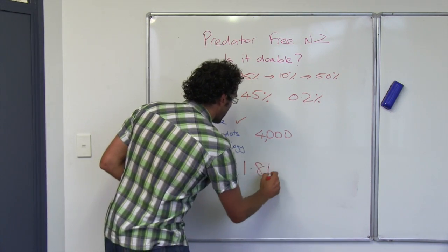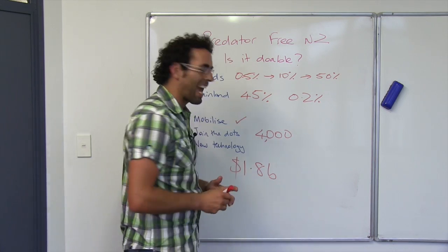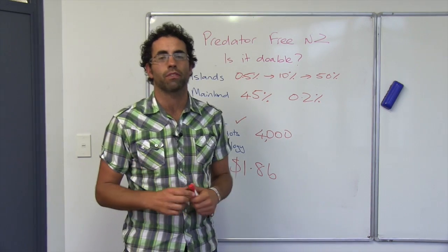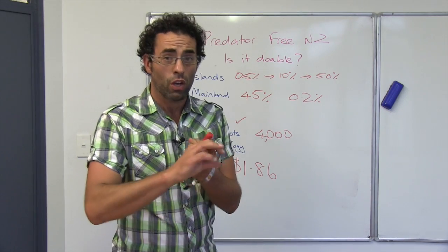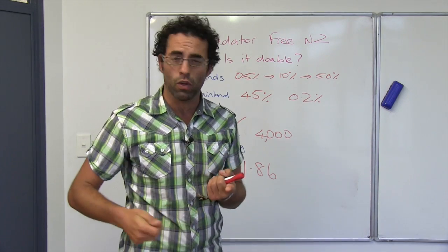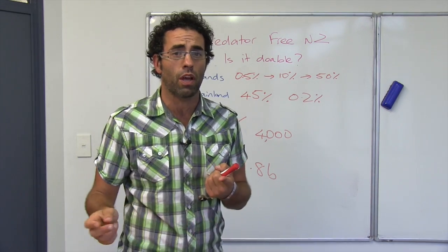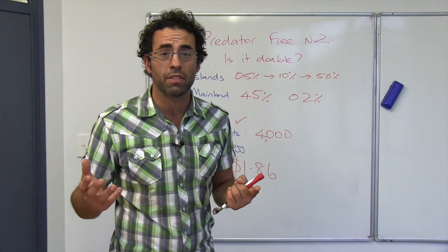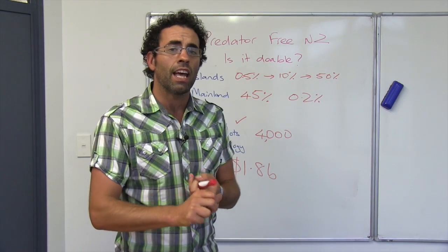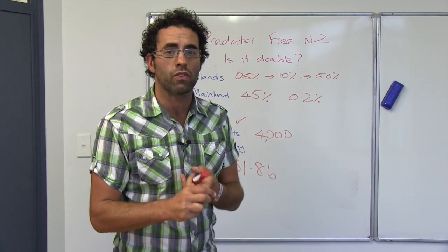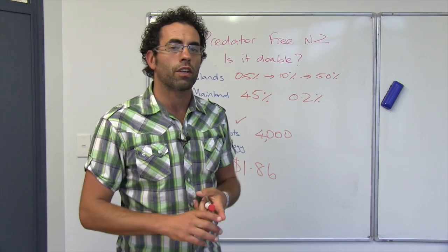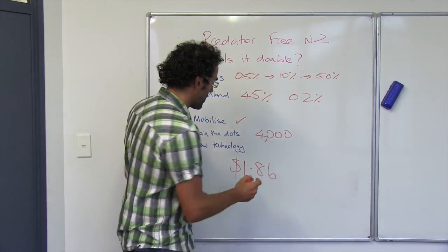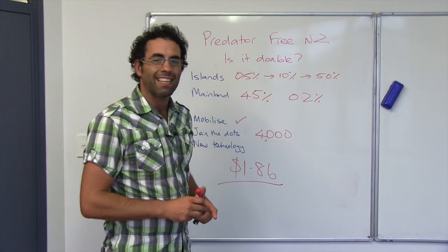We currently spend about $1.8 billion at the moment on the damage that predators cause. That's two things. That's controlling for predators - so that's you guys putting out your poison at home or in businesses, that sort of thing. And secondly, the damage that those predators do, things like rats nibbling on grain for example, is a good example of the economic damage that is done. $1.8 billion.